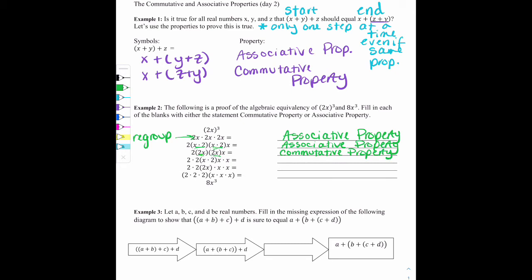In the line underneath, you're going to notice that some groupings have changed again. Now we have a different x and 2 grouped together in parentheses. So this is an example of the associative property. From that line to the next, the x and the 2 are still in parentheses, but in this line, the x came first. In this line, the 2 comes first. So that's a change in order, which is the commutative property.